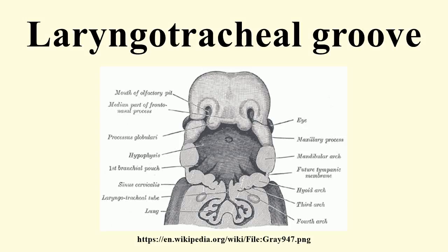The laryngotracheal groove is a precursor for the larynx and trachea. The rudiment of the respiratory organs appears as a median longitudinal groove in the ventral wall of the pharynx. The groove deepens and its lips fuse to form a septum which grows from below upward and converts the groove into a tube — the laryngotracheal tube. The cephalic end opens into the pharynx by a slit-like aperture formed by the persistent anterior part of the groove.